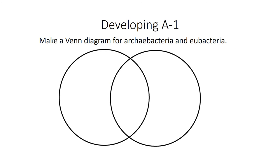A developing question: make a Venn diagram for archaeobacteria and eubacteria. You could include chemical makeup, location, and shared structures like the nucleoid, ribosomes, cell membrane, and cell wall.